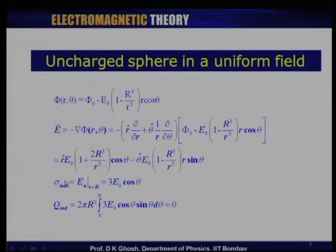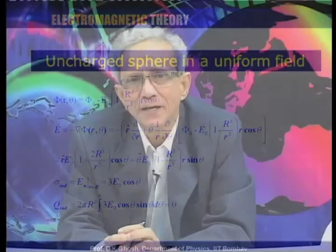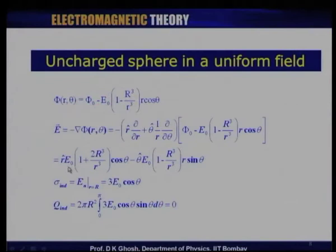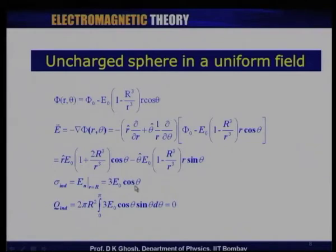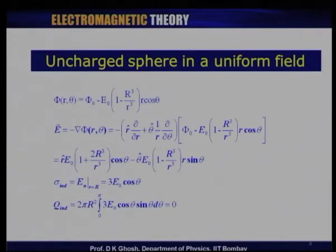The charge induced on the surface equals the normal component of the electric field at r equals R. Taking this expression and evaluating the radial component at r equals R, the induced charge equals the normal component of the electric field, which is given by 3 times E_0 times cos theta. In the northern hemisphere the induced charge is positive, and in the southern hemisphere it is negative. Integrating over the angles, the total induced charge is equal to 0.